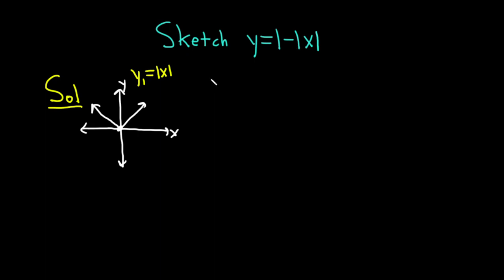If you had a negative in front of the absolute value of x, so if instead you had y sub 2 equals minus absolute value of x, this would be an upside-down V. Here's the y-axis, and here's the x-axis. This is an upside-down V.